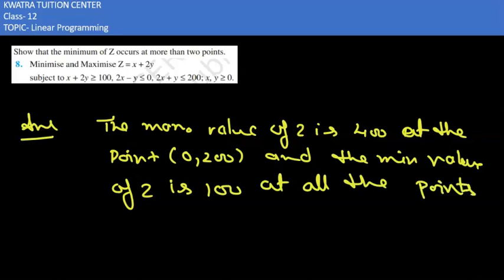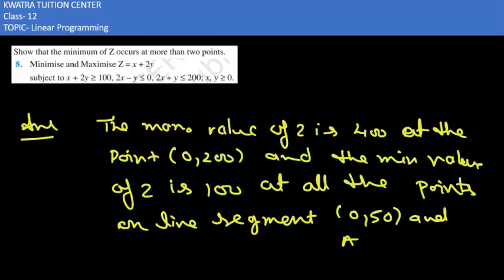Now we have some number of points which are obtained on the line segment, the line segment joining the point (0,50) which are the coordinates of point A, and (20,40) which are the coordinates of point B. Here we have our solution of this question.